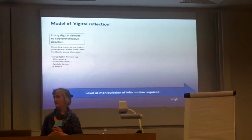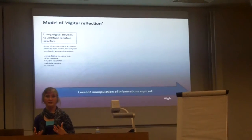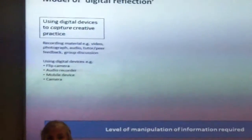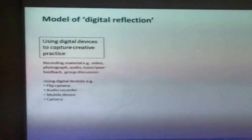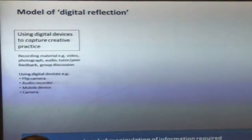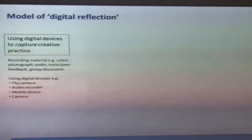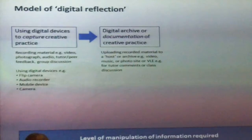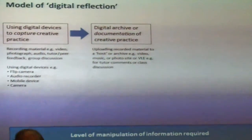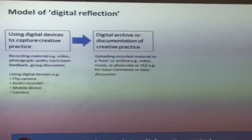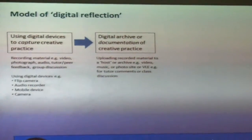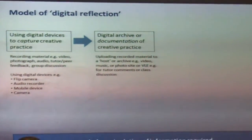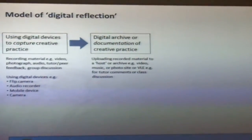On the left, with a low level of manipulation, you can use digital devices to capture creative practice or capture any experience — these are just recording devices. So, obviously you can record video, you can record sound, you can record images, but there's no manipulation — you snap it and that's it. Then moving a little further up the scale, we've got digital archive or documentation technologies — things like Flickr or YouTube where you can upload and archive material. You can add a description, add tags, people can comment and you can get some discussion going. So there is a level of manipulation, but it's more in the description of what you put up there rather than manipulating the thing itself.